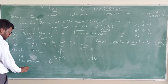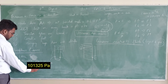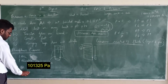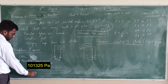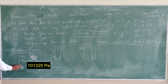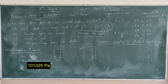The value of atmospheric pressure is approximately one atmospheric pressure, which is nearly equal to one bar. One bar equals 100,000 Pascal. This is one atmospheric pressure.